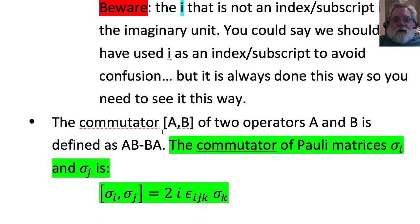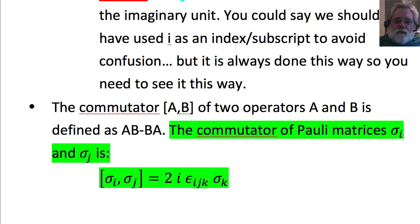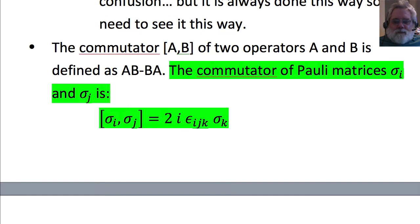The commutator of two operators a and b, written as [a, b], is defined as ab minus ba. Using the work we've already done, the commutator of sigma_i with sigma_j is 2i epsilon_ijk sigma_k. So that one formula tells us how to compute all six commutators of the Pauli matrices — we just need to know how to apply the Levi-Civita symbol.